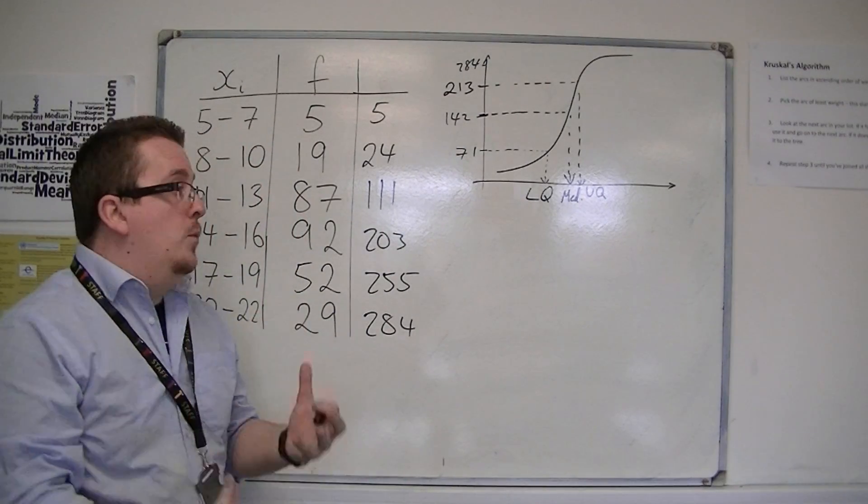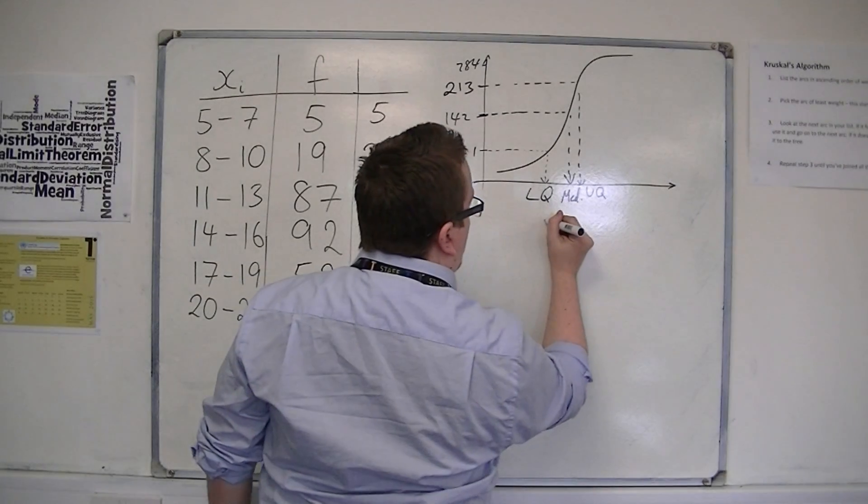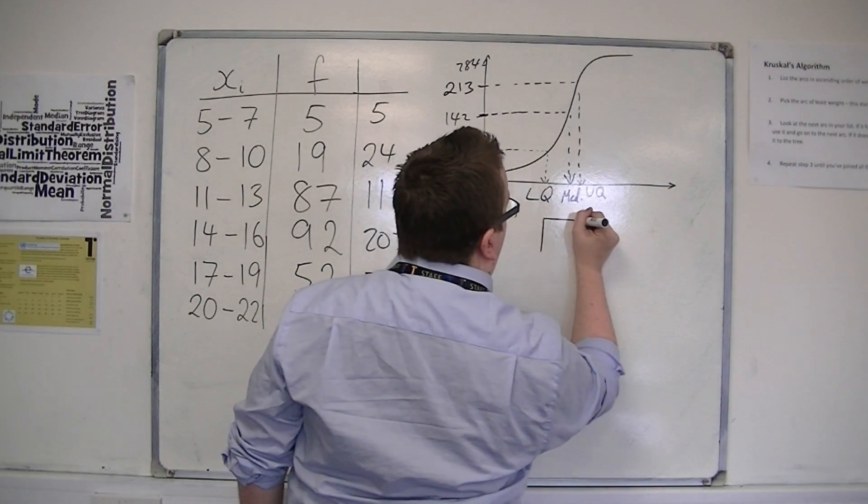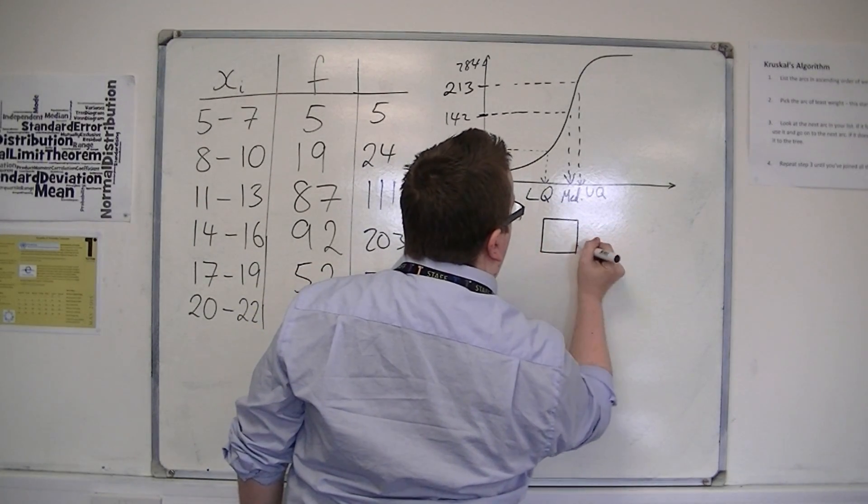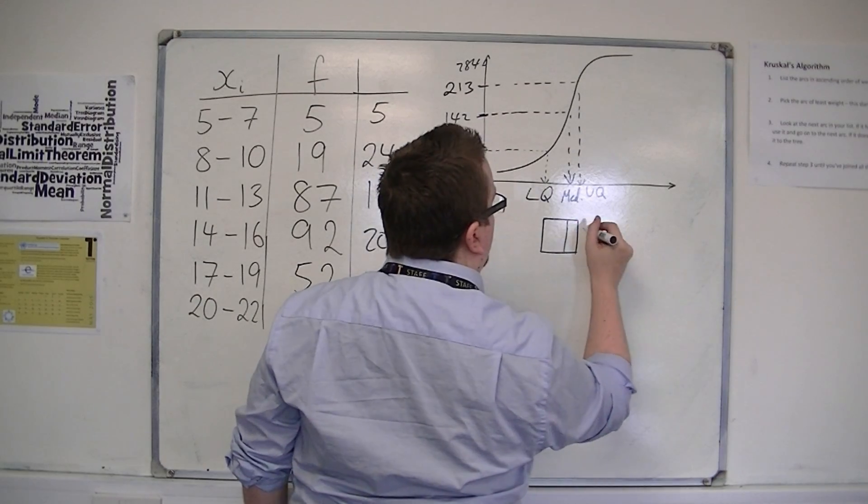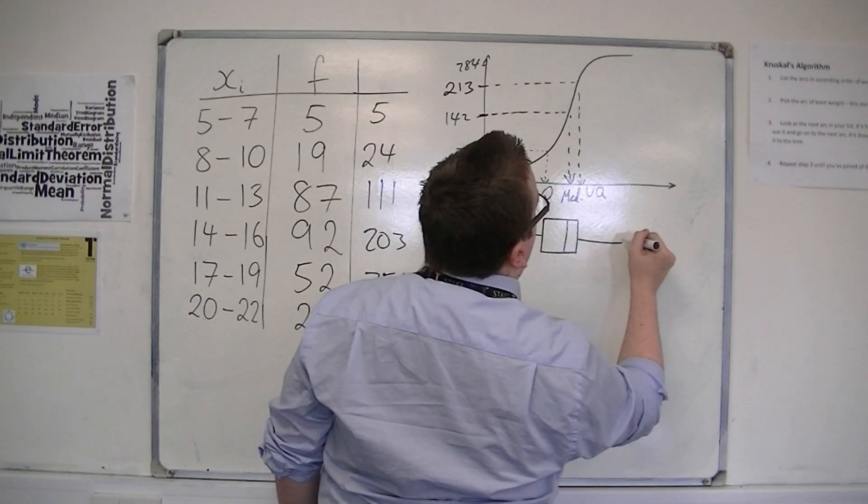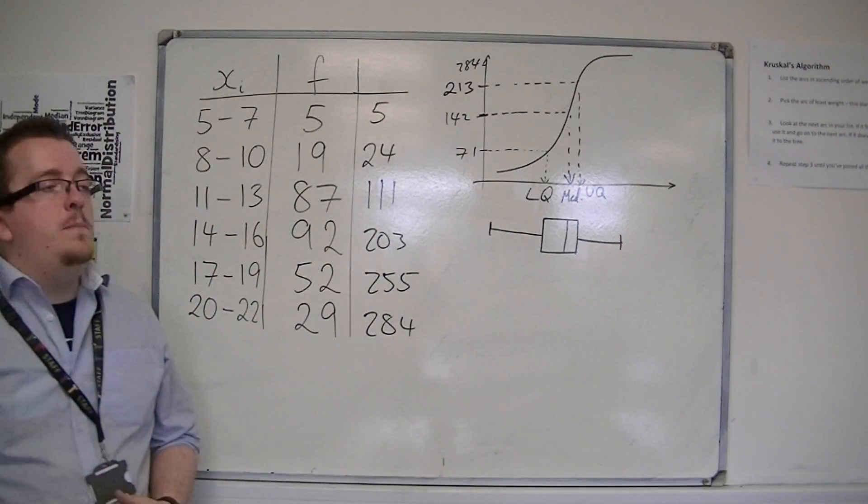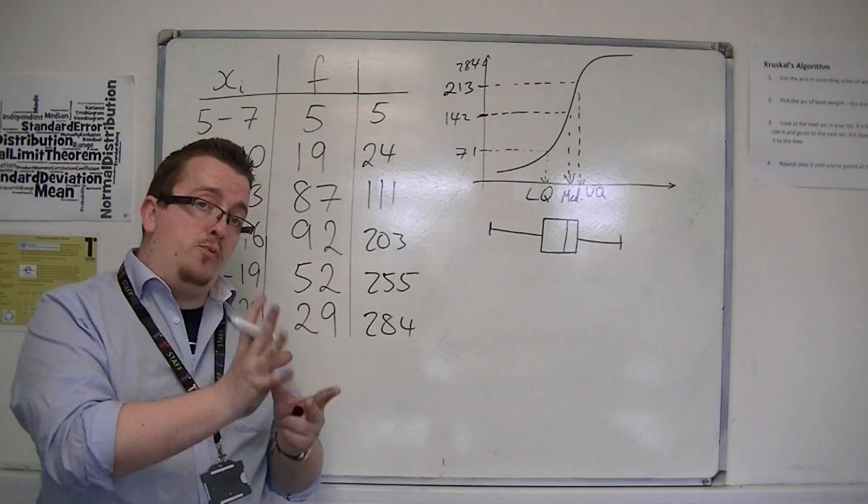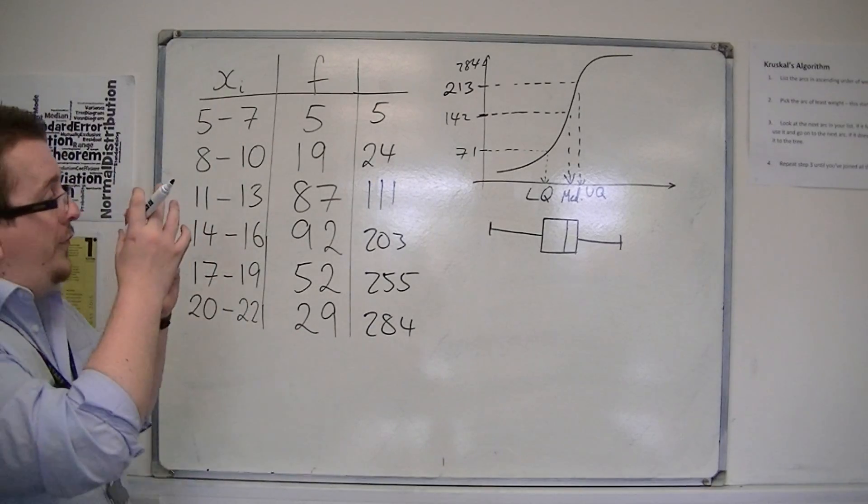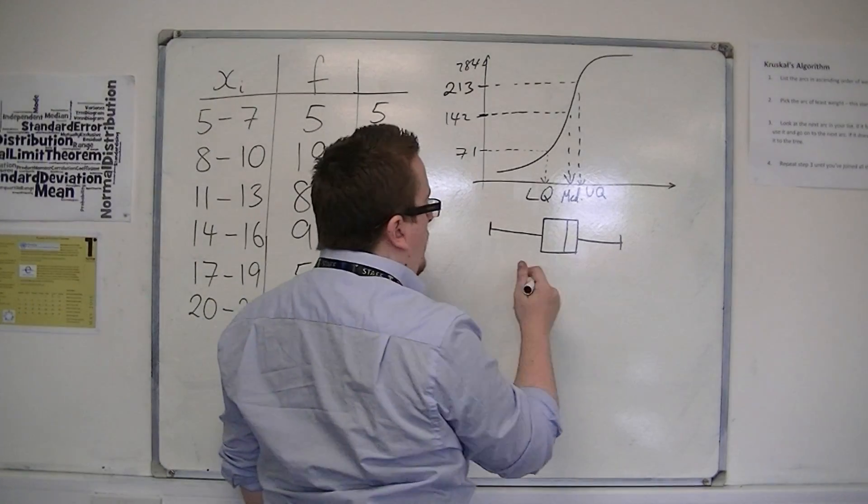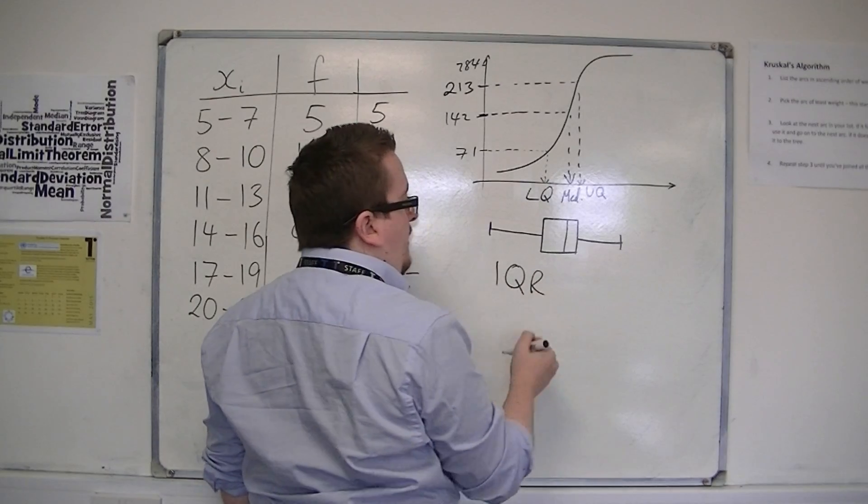So that would then lead to drawing out a box and whisker diagram, or just a box plot, as it's sometimes referred to. And by that, you would be able to compare how spread out the data was.